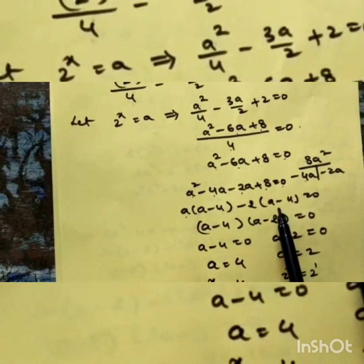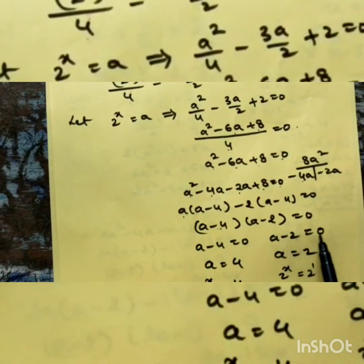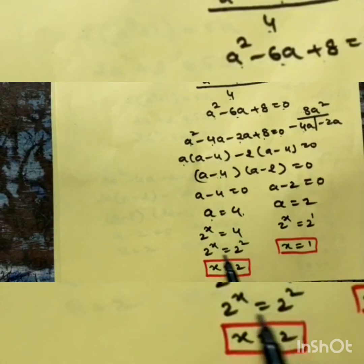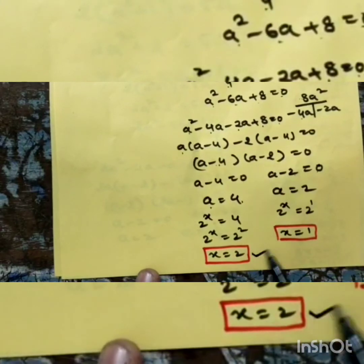So: a² - 4a - 2a + 8 = 0. Taking a common from the first pair and -2 from the second: a(a - 4) - 2(a - 4) = 0. Then (a - 4) is the first factor and (a - 2) is the second factor. So a = 4 or a = 2. Since a = 2^x, for a = 4: 2^x = 2², so x = 2.